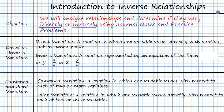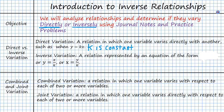Direct variation is a relation in which one variable varies directly with another, such as when y is equal to kx. In this case, k is some constant, and we can say that y is going to vary directly with x. The form you're used to seeing is y equals mx plus b, because m will be constant the whole time.